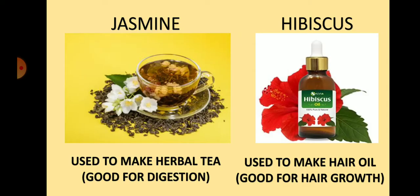Look here the picture of jasmine and hibiscus. Jasmine is used to make herbal tea and is good for digestion. Hibiscus is used to make hair oil and is good for hair growth.